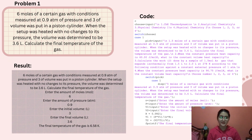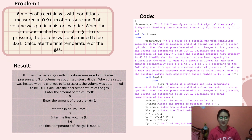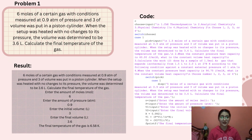The first problem is: six moles of a certain gas with conditions measured at 0.9 atm of pressure and 3 liters of volume was put in a piston cylinder. When the setup was heated with no changes to its pressure, the volume was determined to be 3.6 liters. Calculate the final temperature of the gas. You can see the code here.